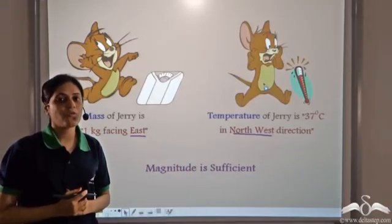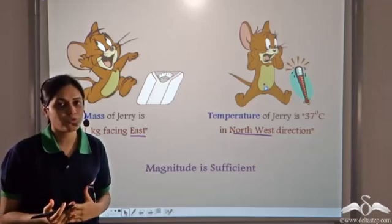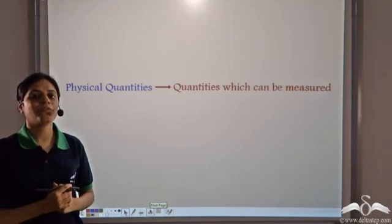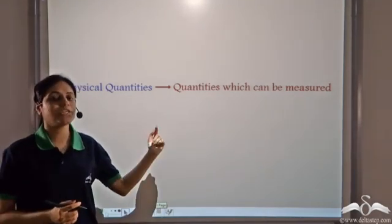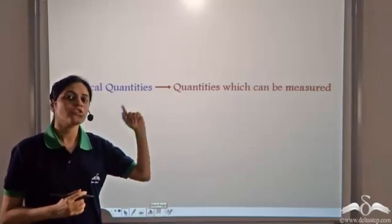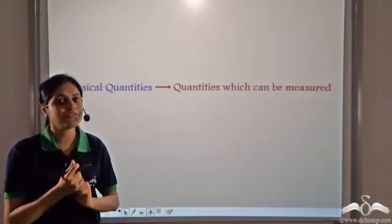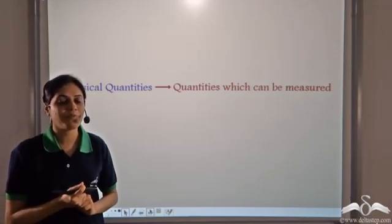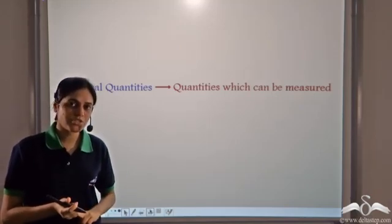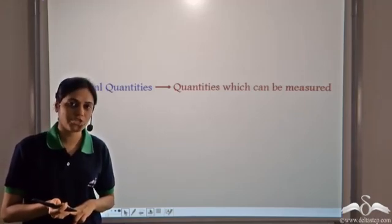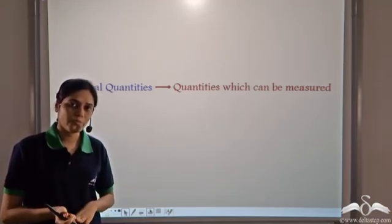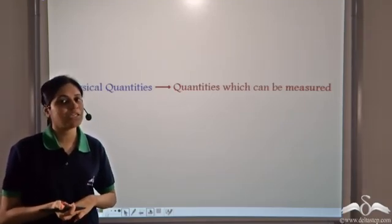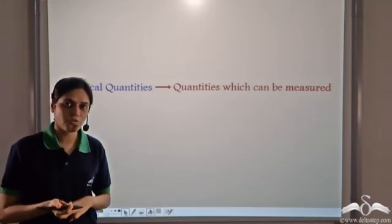Now talking of quantities, what kind of quantities are we actually talking about? We are talking about physical quantities. Physical quantities are the quantities which can be measured — any quantity which can be measured is a physical quantity. For example, length can be measured with a meter rule, temperature with a thermometer, and volume with a measuring cylinder.